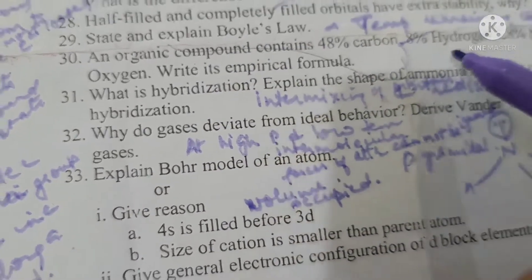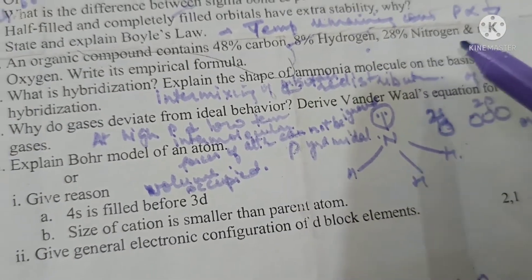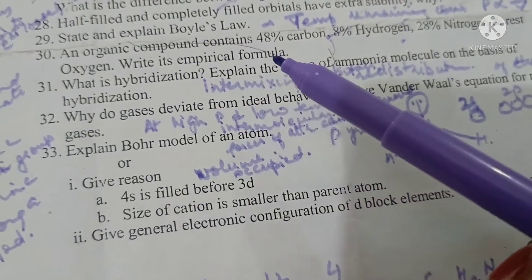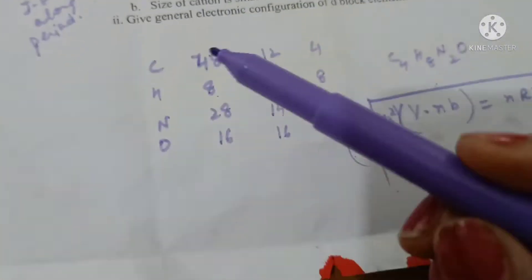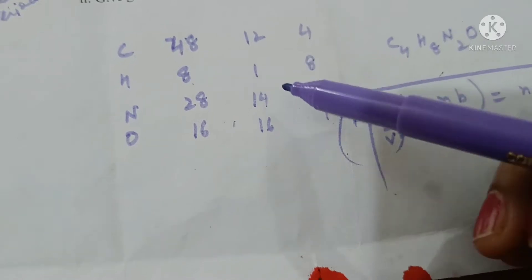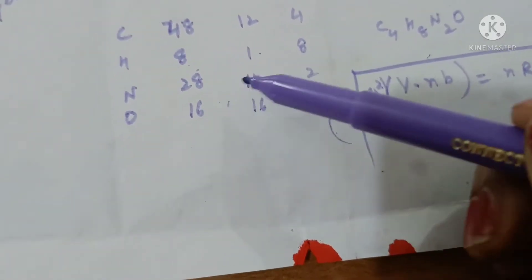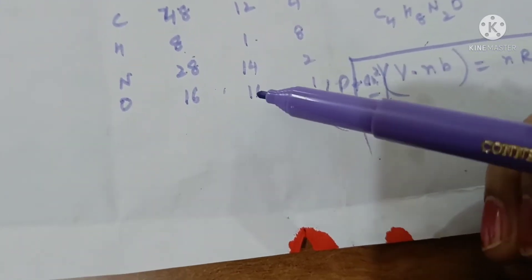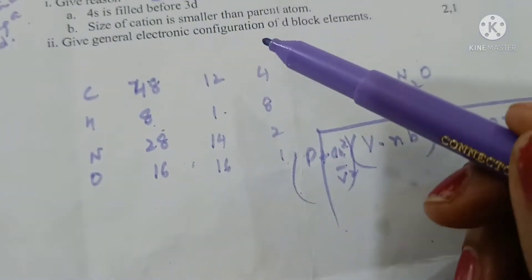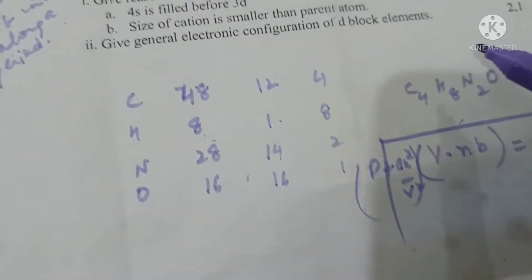An organic compound contains 48 percent carbon, 8 percent hydrogen, 28 percent nitrogen and less oxygen. Dividing the percentage with the atomic mass - 48 by 12 is 4, 8 by 1 is 8, 28 by 14 is 2, oxygen 16 by 16 is 1. We get the empirical formula C4 H8 N2 and O1.